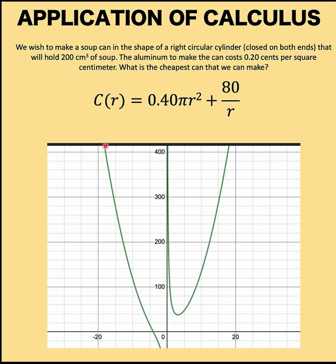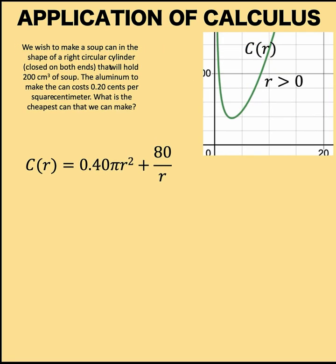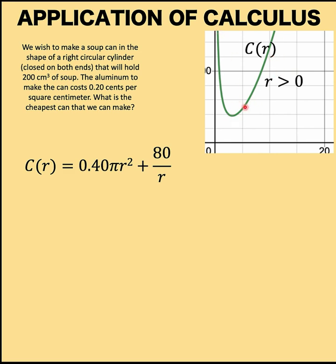Let's investigate this cost function. The graph looks like this. There are two parts: this part at the left side of the y-axis and another part at the first quadrant. Since r is greater than 0, we are only interested in this part at the right side of the y-axis. We want to find the minimum value.